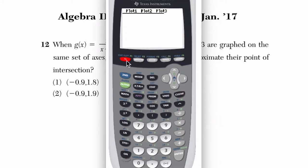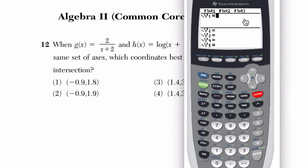Okay, so I fixed that. I go to y equals, clear off any old functions, and then I'm going to enter our first function, which is 2 divided by - I'm going to make sure to enclose this in parentheses - x plus 2.